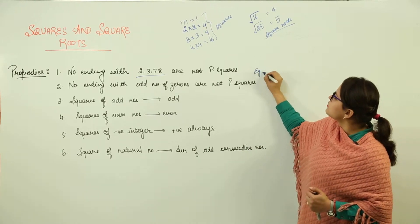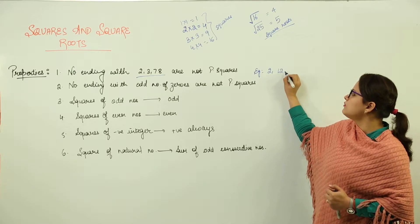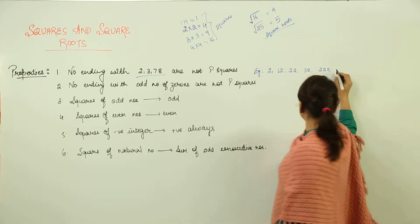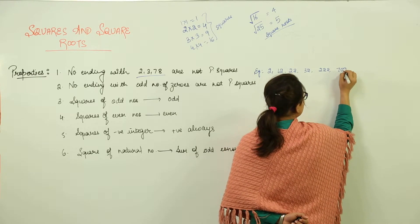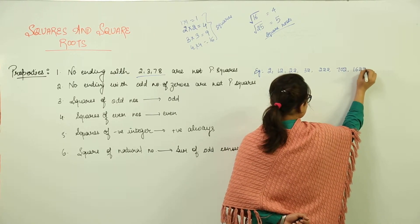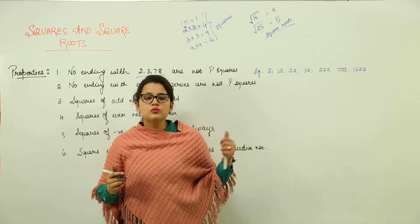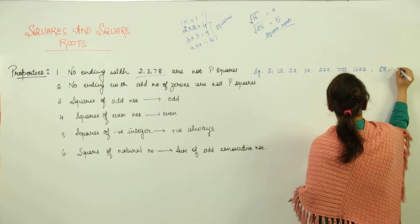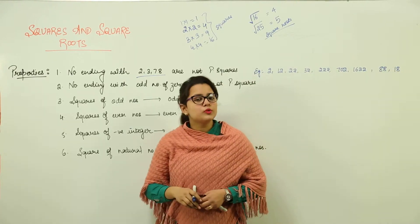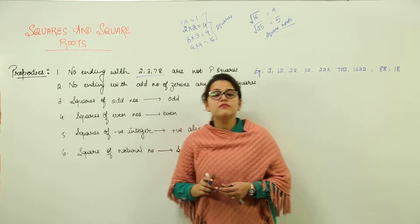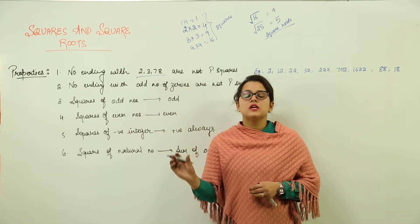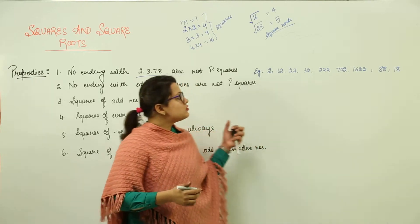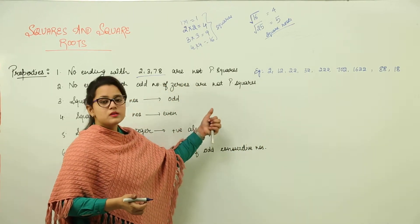Examples for this property include numbers like 2, 12, 22, 32, 202, 702, 1622, 88, or 18 — all of these are not perfect squares. So once you are given a question to identify whether a given number is a perfect square or not, you can use this property directly to check for yourself.